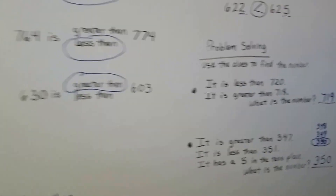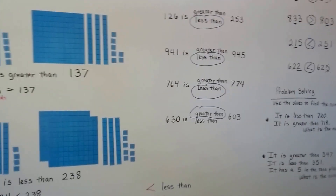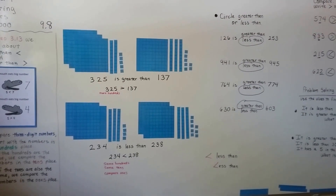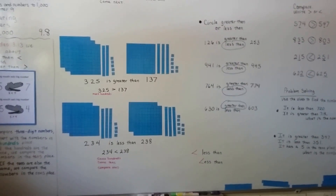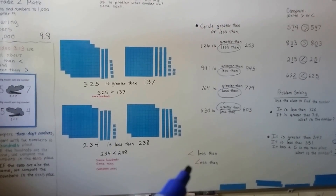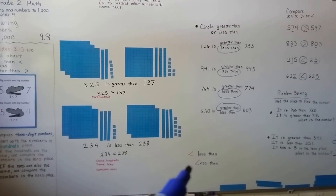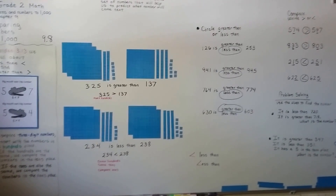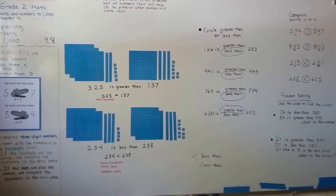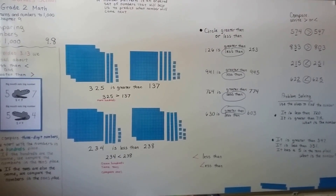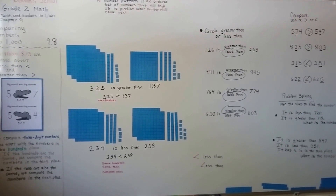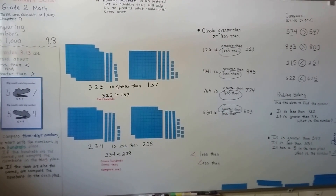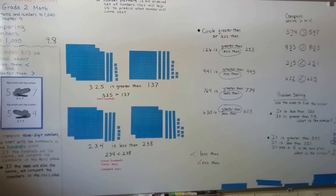So that's comparing numbers to a thousand with less than and greater than. Remember, the big mouth eats the big number, and you know it's the less than symbol because it looks like a crooked L. The other one is greater than. We're going to continue talking about patterns and numbers to a thousand. Hope you're having a great day — I'll see you next video. Bye!